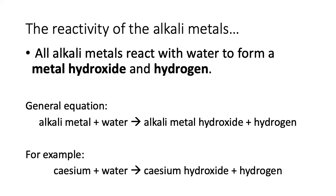For example, if you take caesium and react it with water, you form caesium hydroxide and hydrogen. Pause the video and write out the general equation, because it will help you with what we're going to do next. That is: alkali metal plus water makes alkali metal hydroxide plus hydrogen.